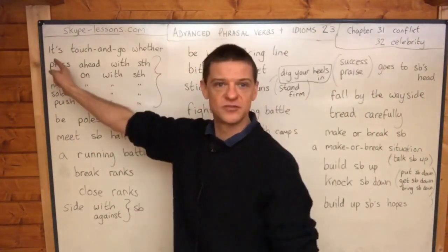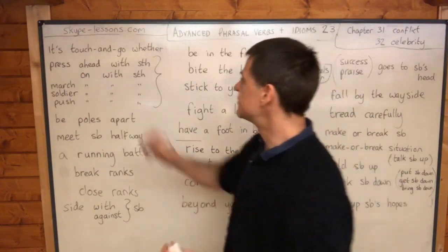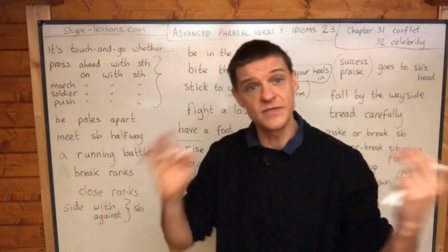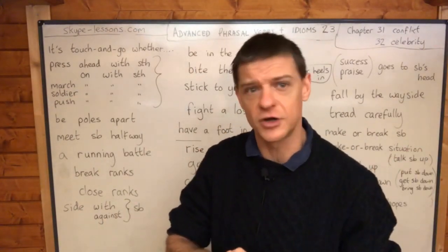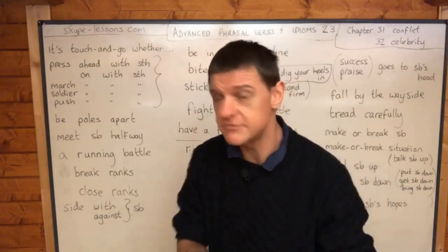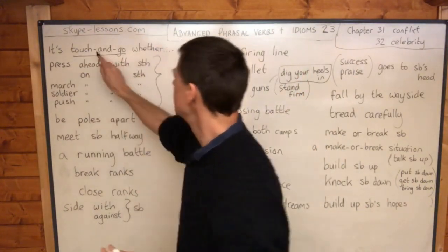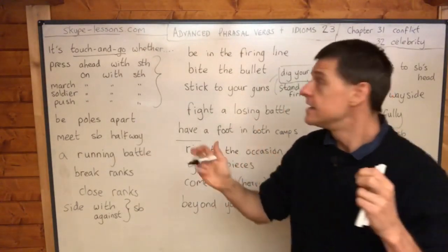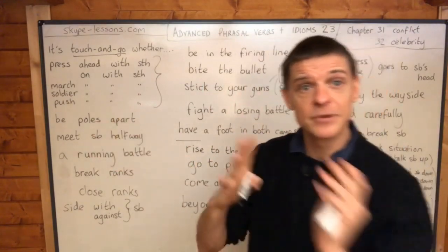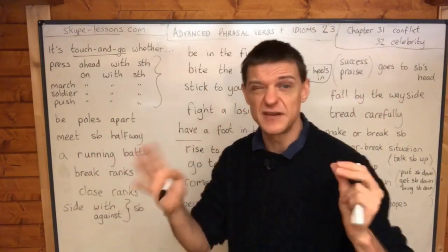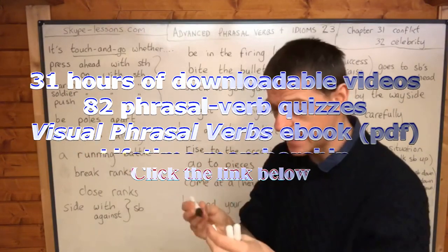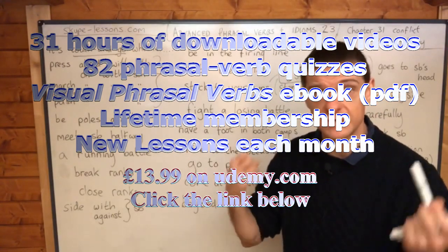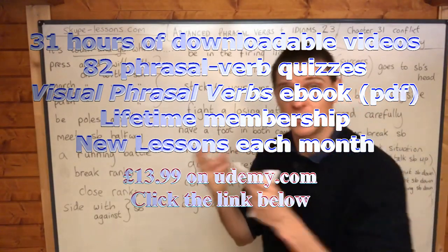I've decided to start with 'touch and go' even though it wasn't in this chapter, because I made a mistake in the previous class — I said 'touch or go' which is incorrect. It should be 'touch and go' with hyphens. It means it's not certain whether one thing or another will happen — similar to saying 50/50. For example: 'It's touch and go whether he'll live or die' — you don't know whether the patient will survive.